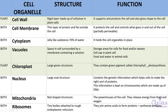The second organelle is the cell membrane, which is present in both plant and animal cells. It is a thin layer of protein and fat located outside the cell. It protects the cell and its major function is to control what goes in and out of the cell, meaning it is partially permeable. Partially permeable means it gives permission to certain substances to enter or exit while restricting others.